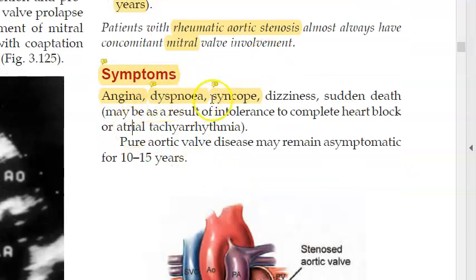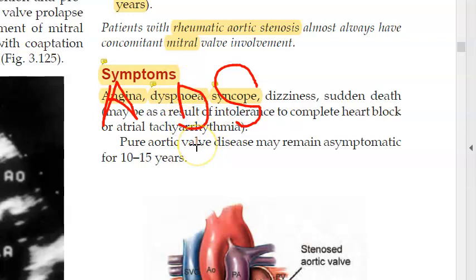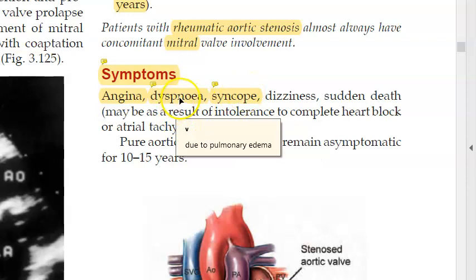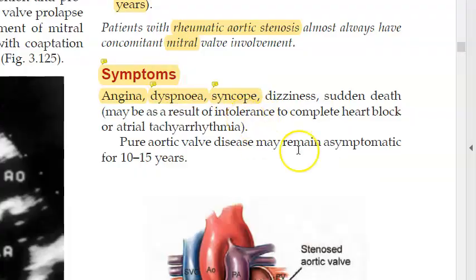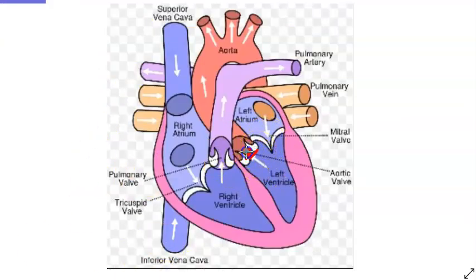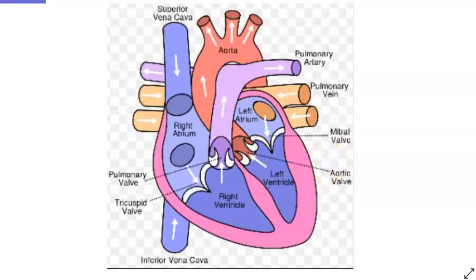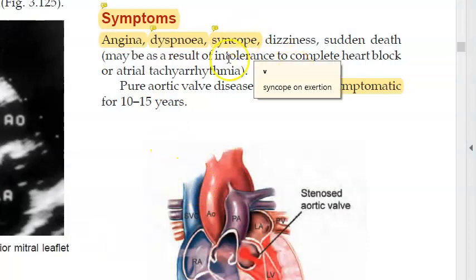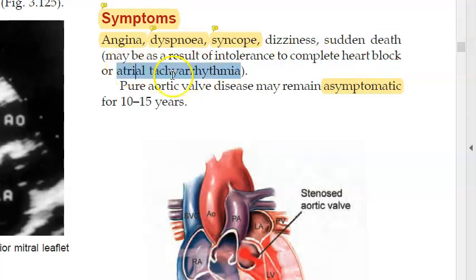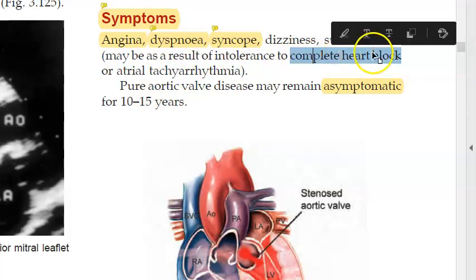Symptoms in aortic stenosis are remembered as SAD: syncope, angina, and dyspnea. If they have angina, that is one level; syncope is one more level; dyspnea indicates a very poor prognosis. Angina is chest pain or discomfort; syncope is fainting episodes; dyspnea is difficulty breathing. On exertion these people can have syncope and can go into sudden death due to atrial tachyarrhythmia or complete heart block.